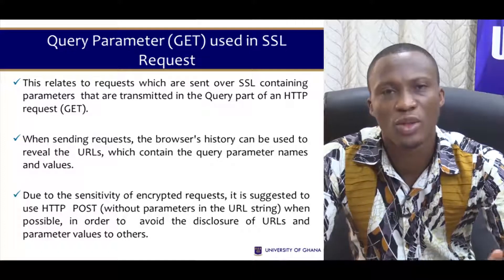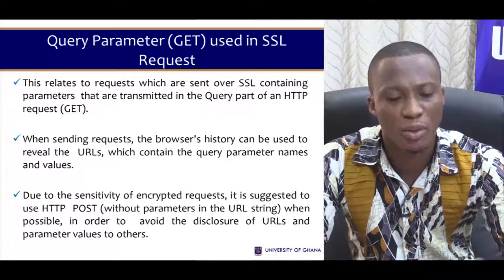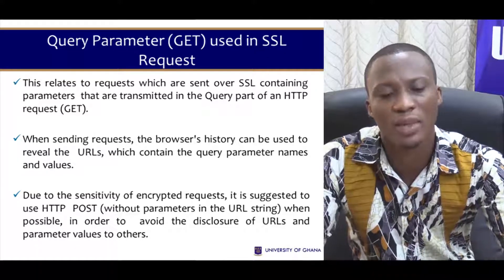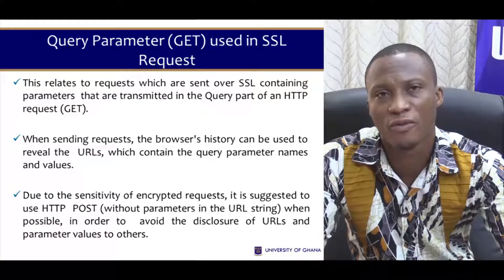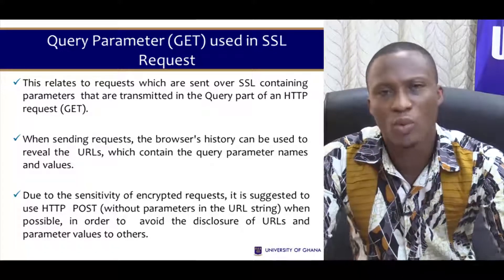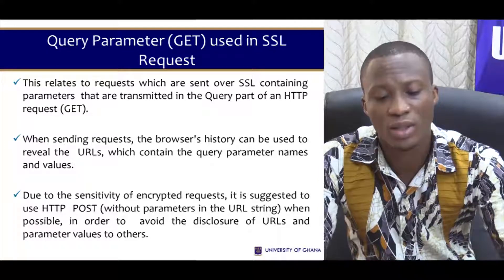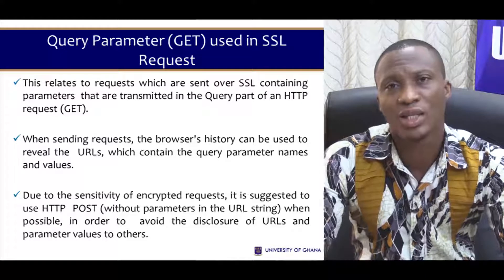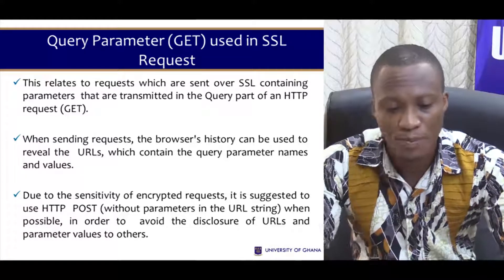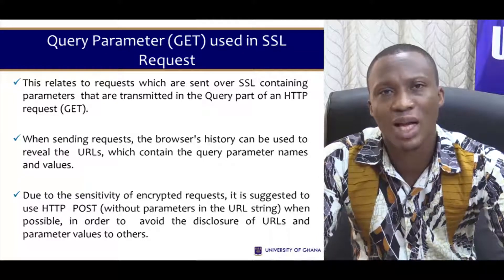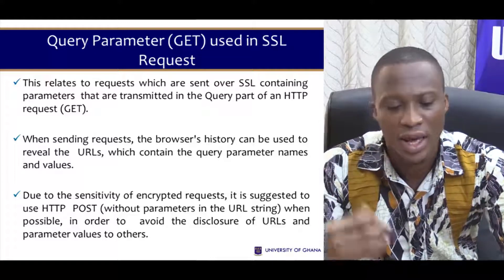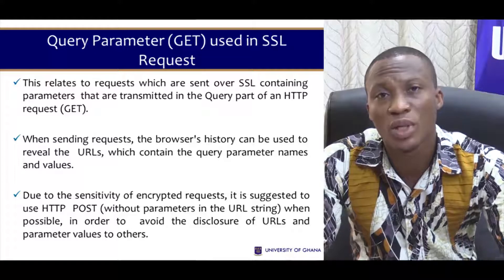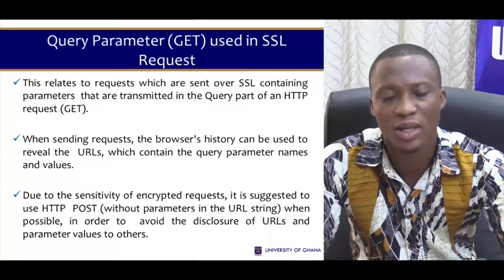Another vulnerability involves query parameters used in requests. When a web application sends requests over SSL, parameters may be transmitted in the query part of an HTTP GET request. The browser history can be used to review the URL, which may expose important details to an attacker. Due to the sensitivity of encrypted requests, it is suggested to use HTTP POST, which does not include parameters in the URL string.